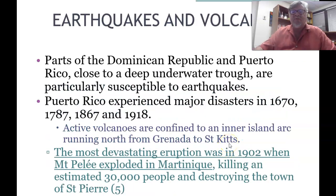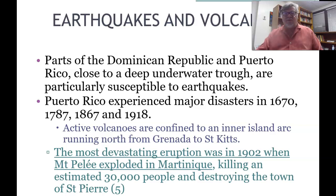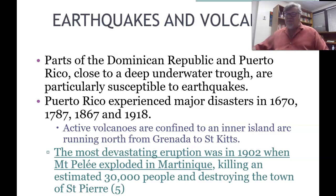Parts of the Dominican Republic and Puerto Rico, close to the deep underwater trough, are particularly susceptible to earthquakes. Puerto Rico experienced major disasters in 1670, 1787, 1867, and 1918. Active volcanoes are confined to an inner island arc running north from Grenada to St. Kitts. The most devastating eruption was in 1902 when Mount Pelée exploded in Martinique, killing an estimated 30,000 people and destroying the town of St. Pierre.